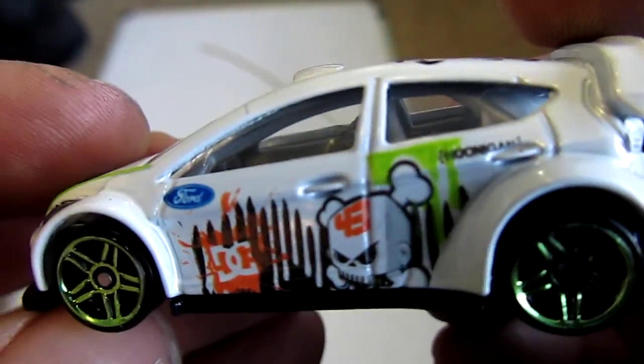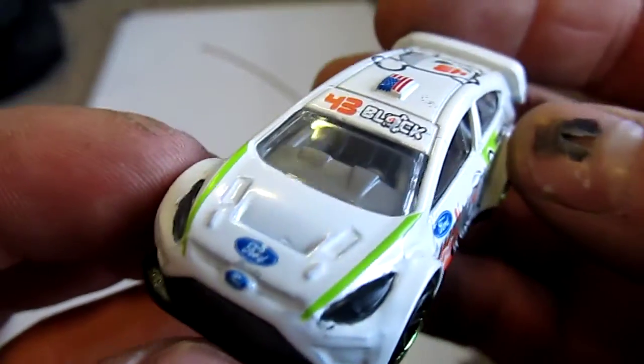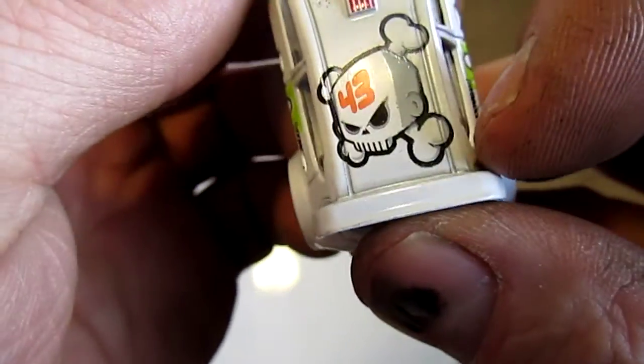It's got the Ford emblem. It says Hoonigan on the side. And it's just awesome. It's got the 43 Ken Block skull on it.